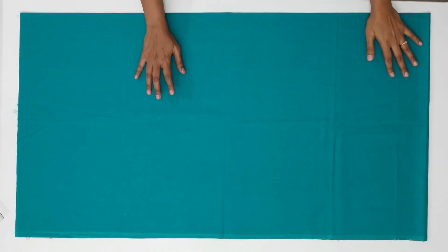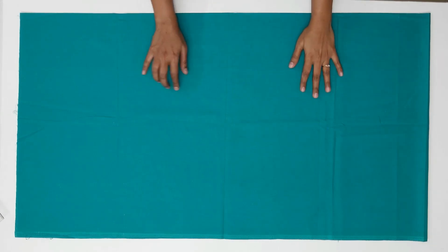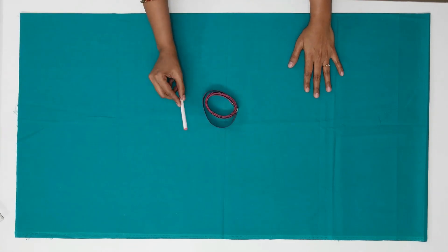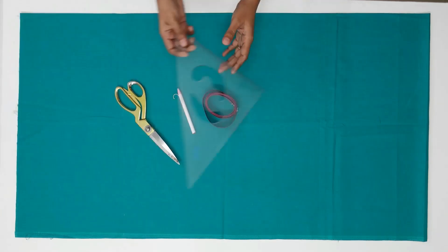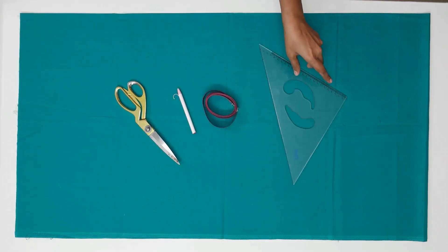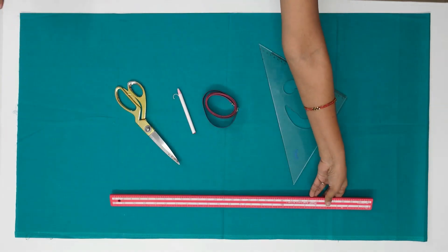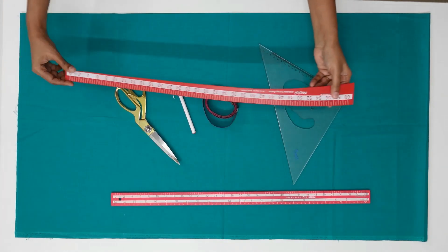Now I am going to cut the fabric for making salwar pant. Before that let me tell you the materials needed: a cotton fabric, measuring tape, marking pencil, scissor, set square, scale, and the curve liner.